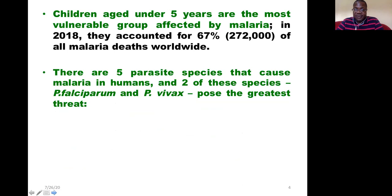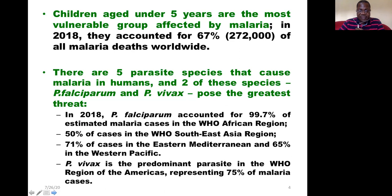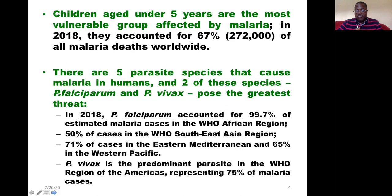In terms of causative pathogens, we have five parasite species that cause malaria in humans, and two of these species are the most prevalent: mainly Plasmodium falciparum and Plasmodium vivax, which pose the greatest threats. In 2018, Plasmodium falciparum accounted for almost 99.7% of estimated malaria cases in the WHO African region.